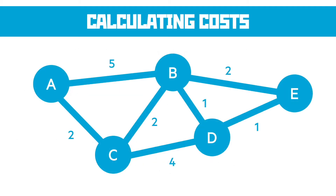Calculating the cost of transmitting over a network involves a node diagram like this. Each dot is a node — it could be a computer, a router, or something similar — and the number on the cable between them explains how long it takes to move between those nodes. Usually we're told which node to start from; in this case it would be node A. If we wanted to calculate the transmission cost to get to node D, we'd look at all the potential routes. Going from A to B to D is 5 plus 1, so that's a cost of 6 to get to D.